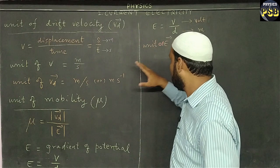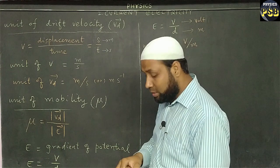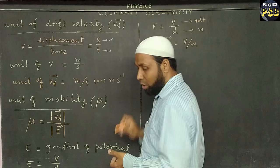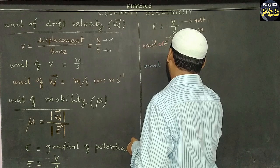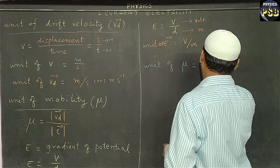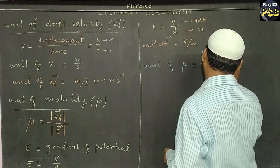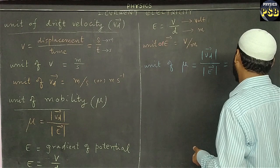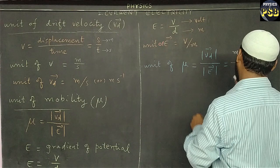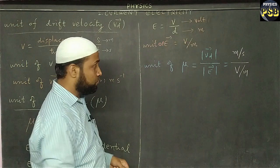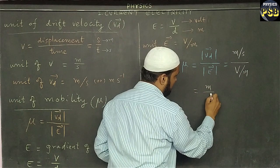Now we know the unit of drift velocity and the unit of electric field. If we substitute these into the expression for mu, the unit of mu equals the magnitude of drift velocity divided by the magnitude of electric field — that is, meter per second divided by volt per meter.